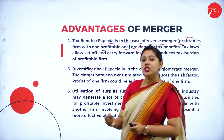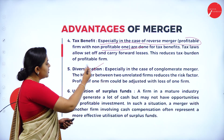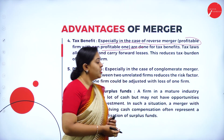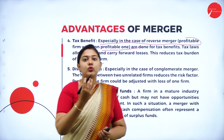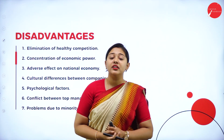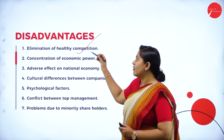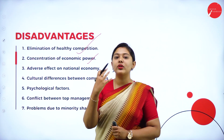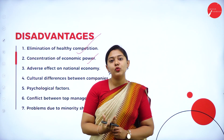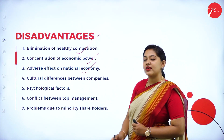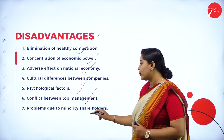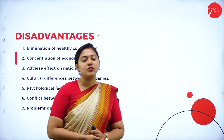The fifth advantage is diversification — especially in conglomerate merger, the merger between two unrelated firms means the profit of one firm can be adjusted against the loss of the other, providing diversification and utilization of surplus funds. Disadvantages include elimination of healthy competition, concentration of economic power with only a few companies, adverse effect on national economy, cultural differences between companies, psychological factors, conflict between top management, and problems due to minority shareholders.